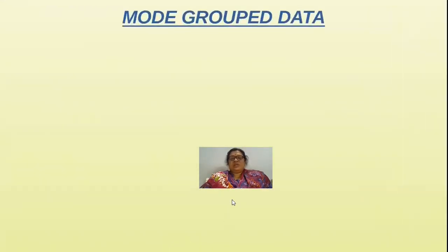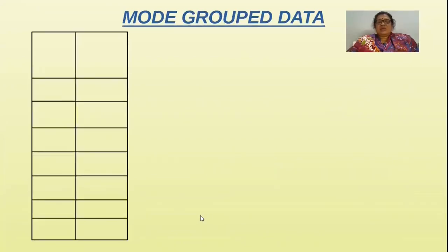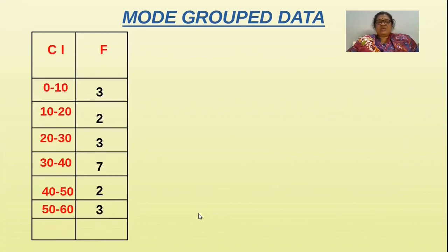We will move on to the next one, that is mode for the grouped data. Let us take the table. The same class interval and the frequencies. The sum of the frequencies is 20. Here the modal class, that is the highest frequency class, this one. You have to underline like this. The class interval is C, that is 10. The lower bound is 30. The sum of the frequencies is 20.